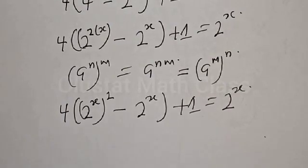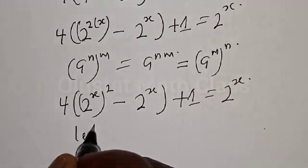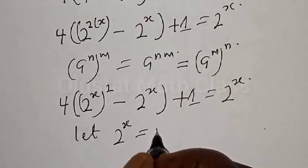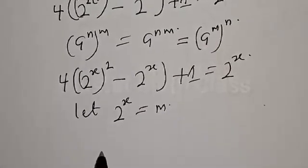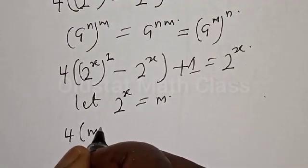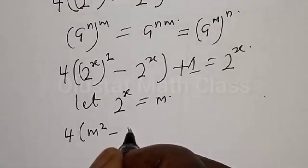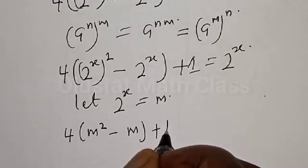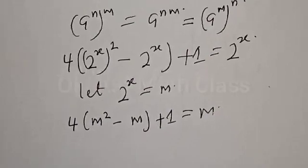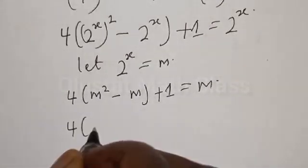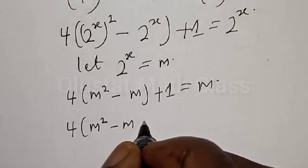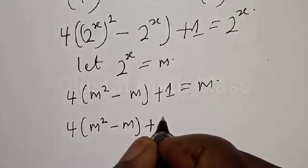Now, let 2 raised to power x equal m. Therefore we have 4 times (m squared minus m plus 1) is equal to m.